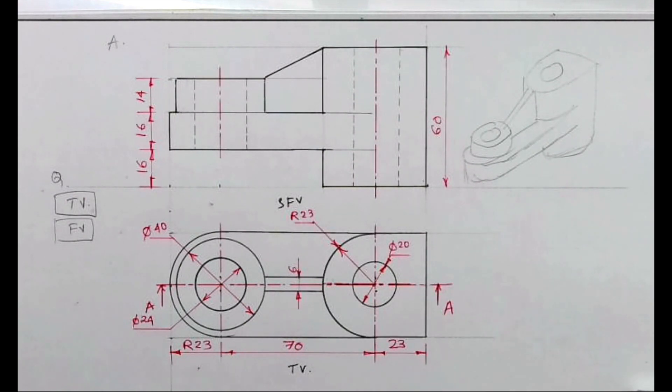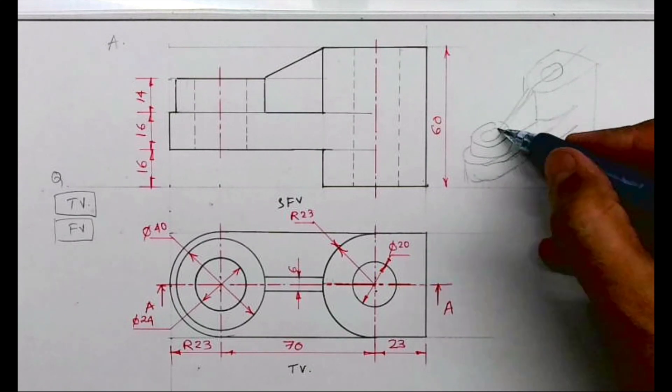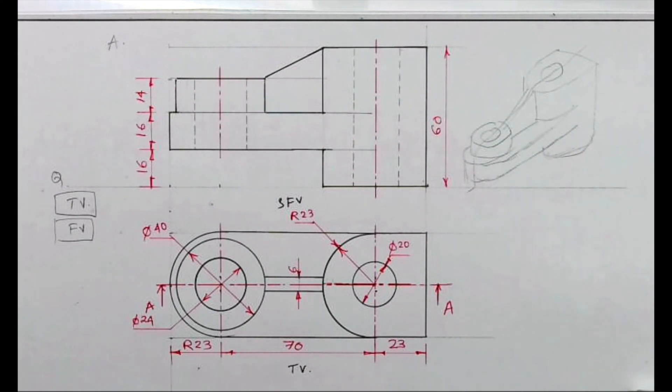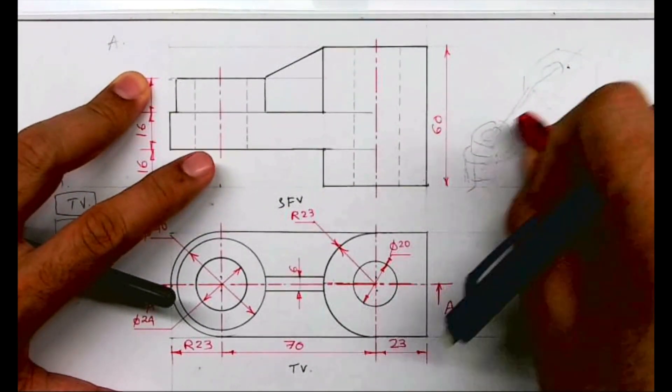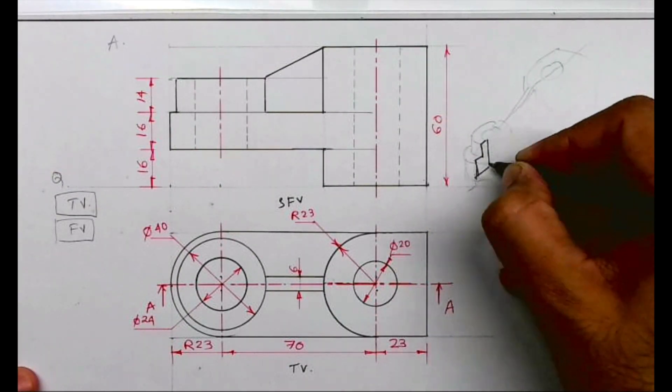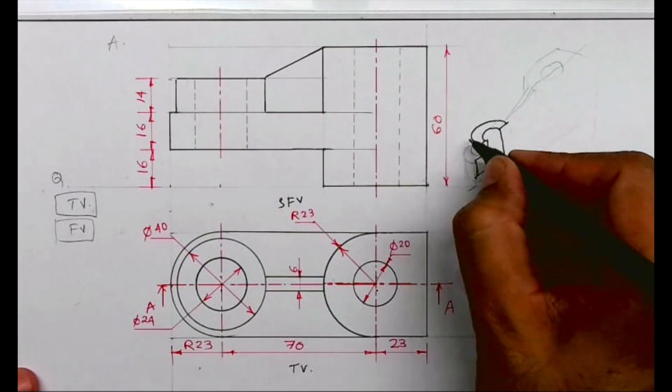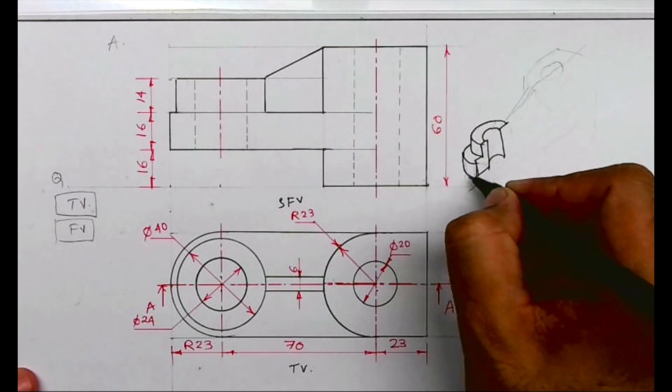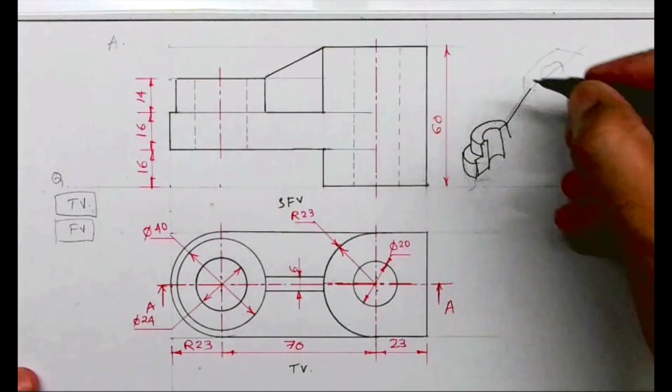So this is how it will appear. After this, when you cut from here like this, see this much portion will go away. Sectional front view along A-A. See when you cut, it will look like this, this part.